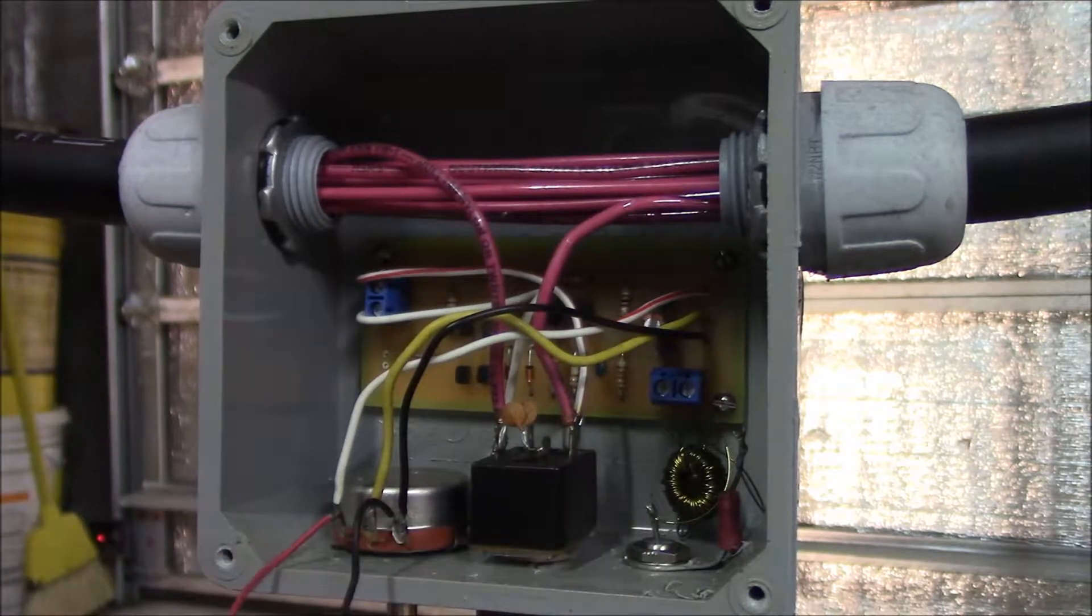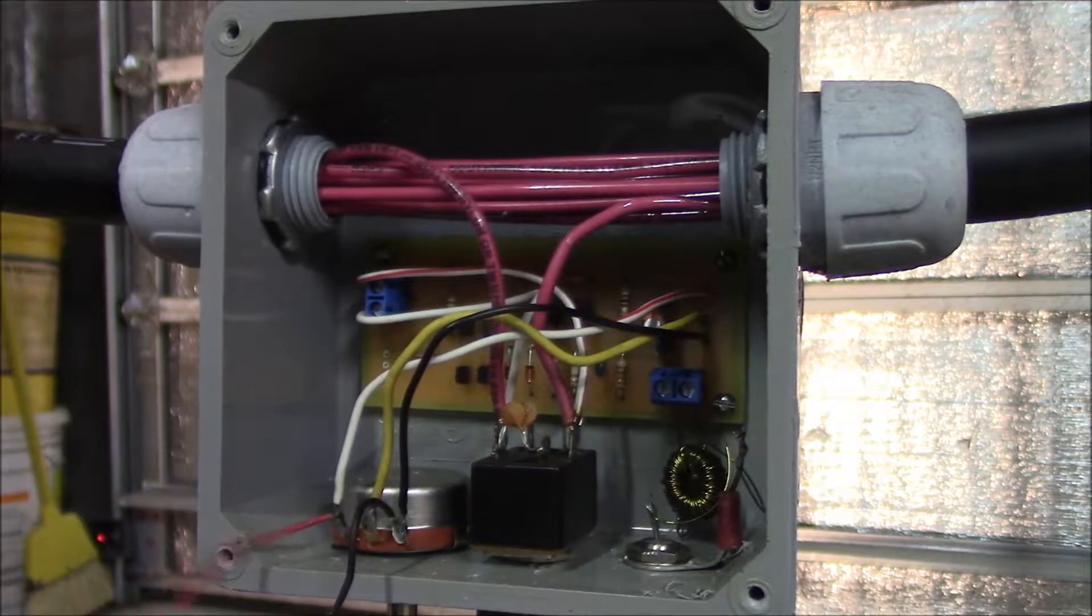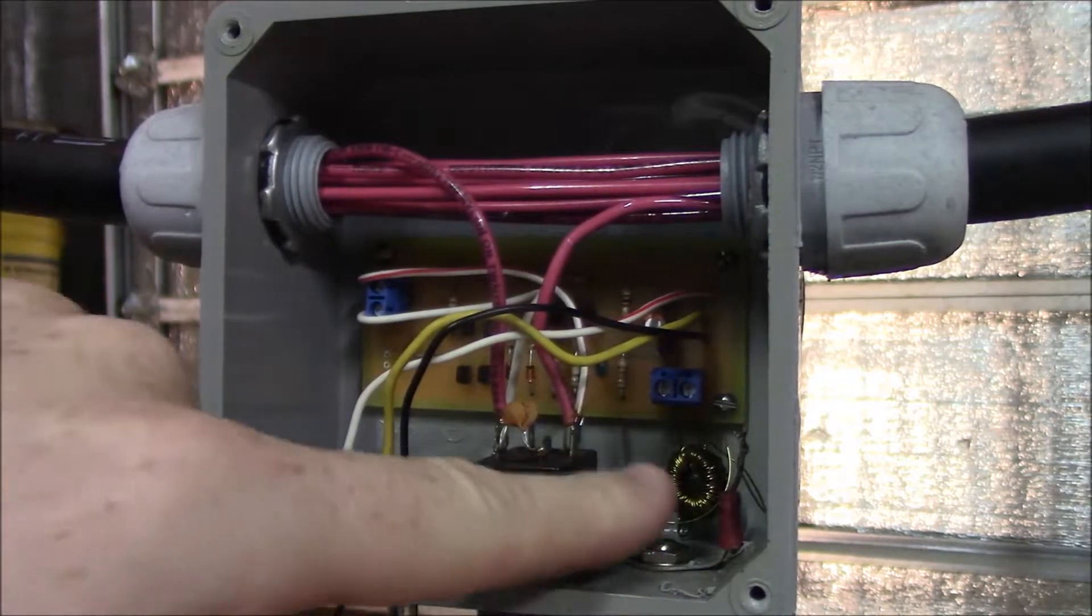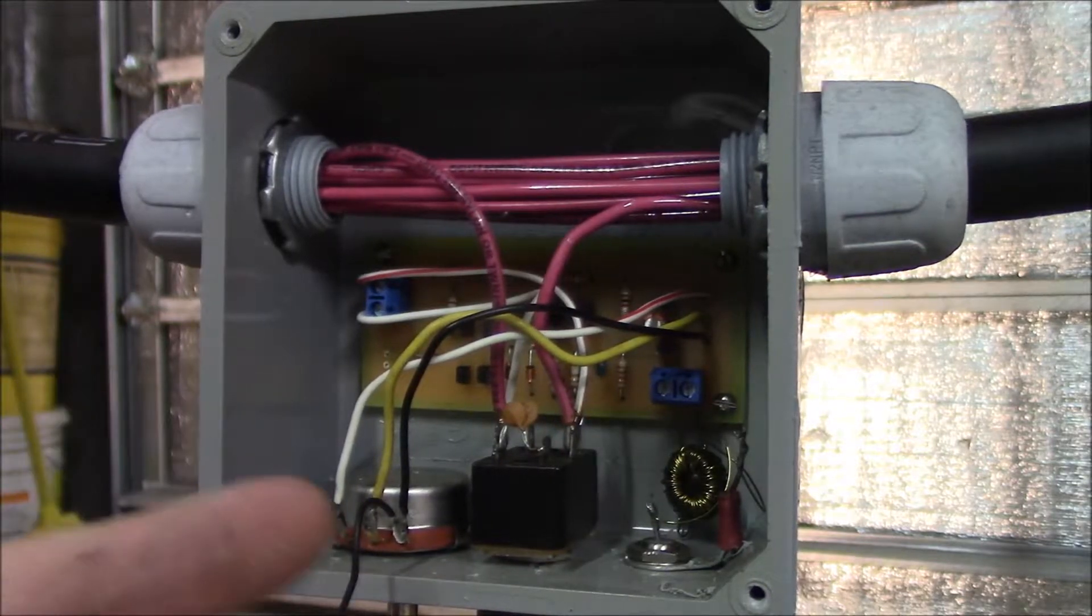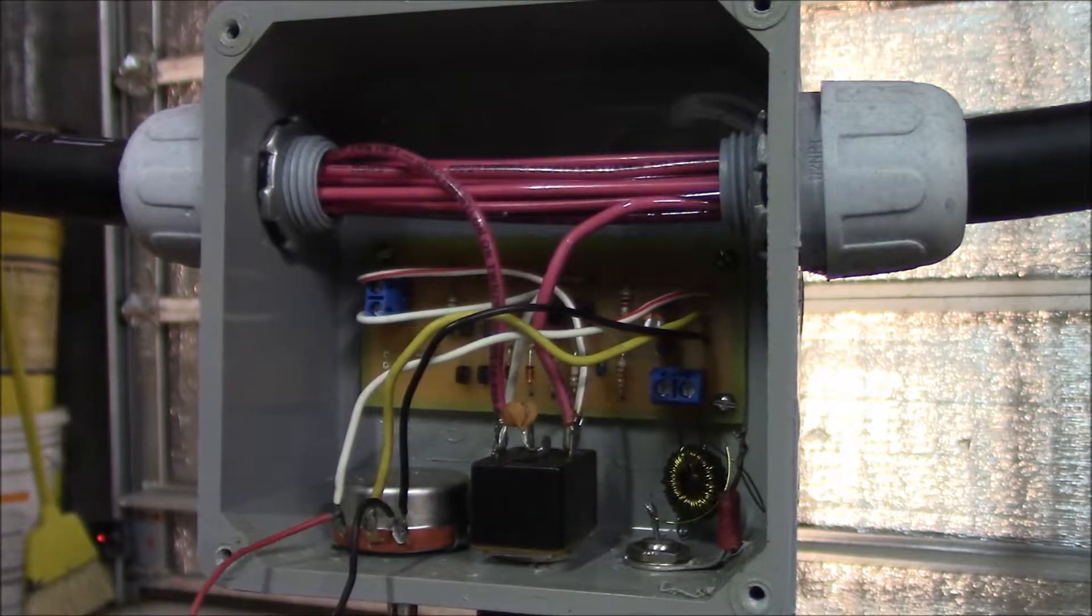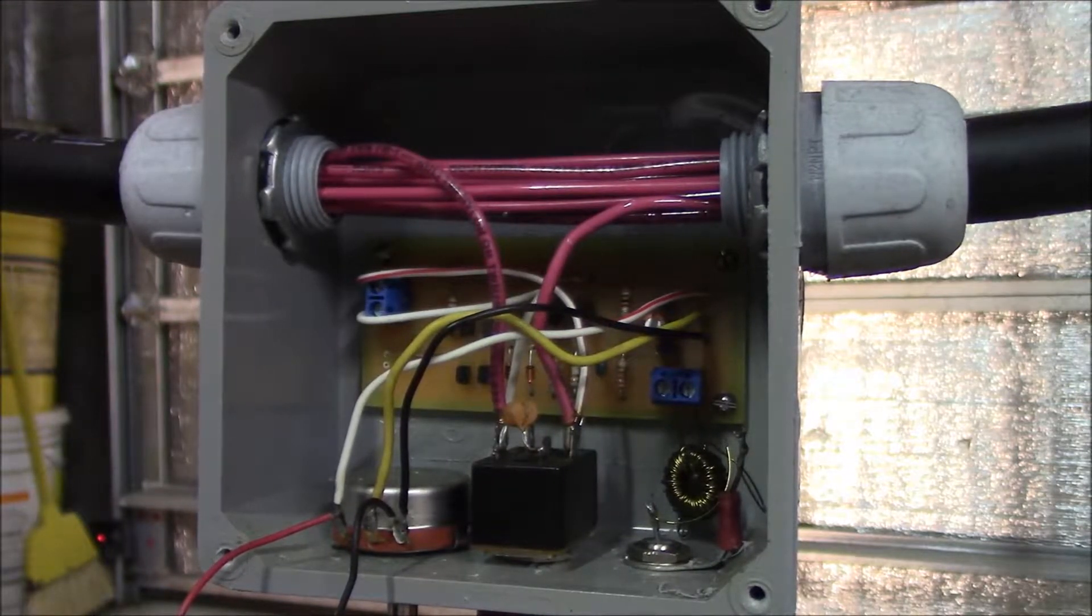So coming out of there, I use 75 ohm TV cable to go to my receiver. So I have an impedance matching transformer. It's also an isolation transformer. Since this is unbalanced, I at least didn't want this to act as an antenna with reference to ground. So it's isolated from ground.